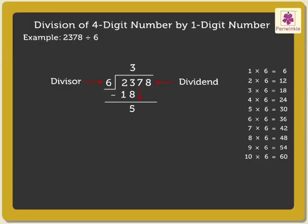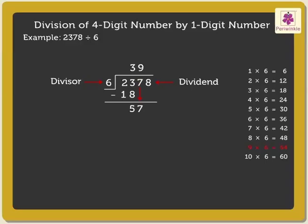Bring down the next digit, that is 7. So, here we compare 57 and 6. 57 is greater than 6, so we can divide 57 by 6. The nearest product is 54. So, we write 9 above the 7. As we know, 9 into 6 is equal to 54. Write the number 54 under 57.